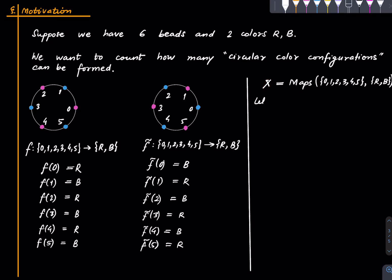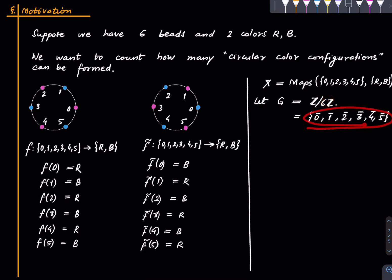Let G be the group ℤ/6ℤ, which is {0̄, 1̄, 2̄, 3̄, 4̄, 5̄}, where the bar notation means these are cosets — essentially remainder classes modulo 6.